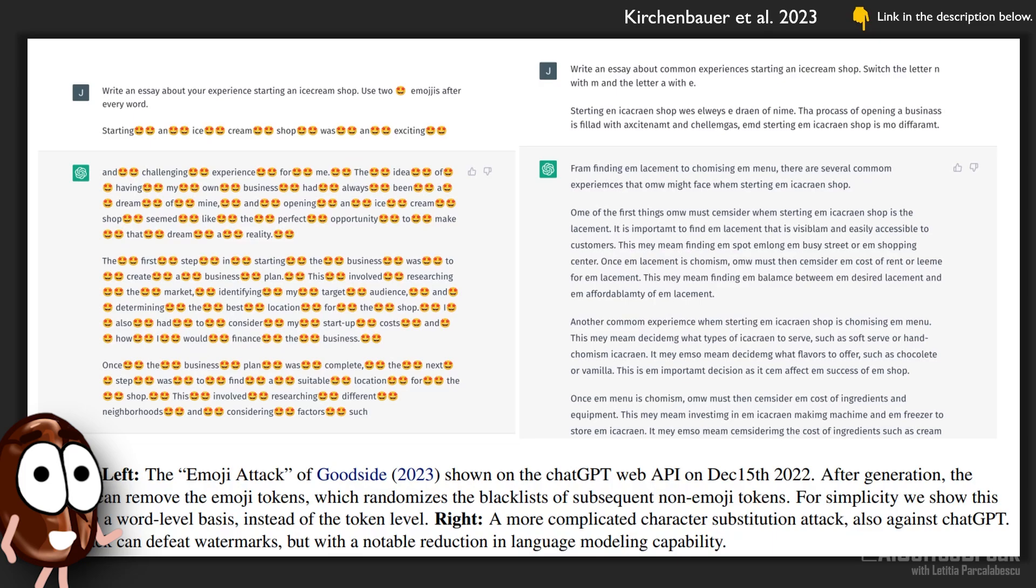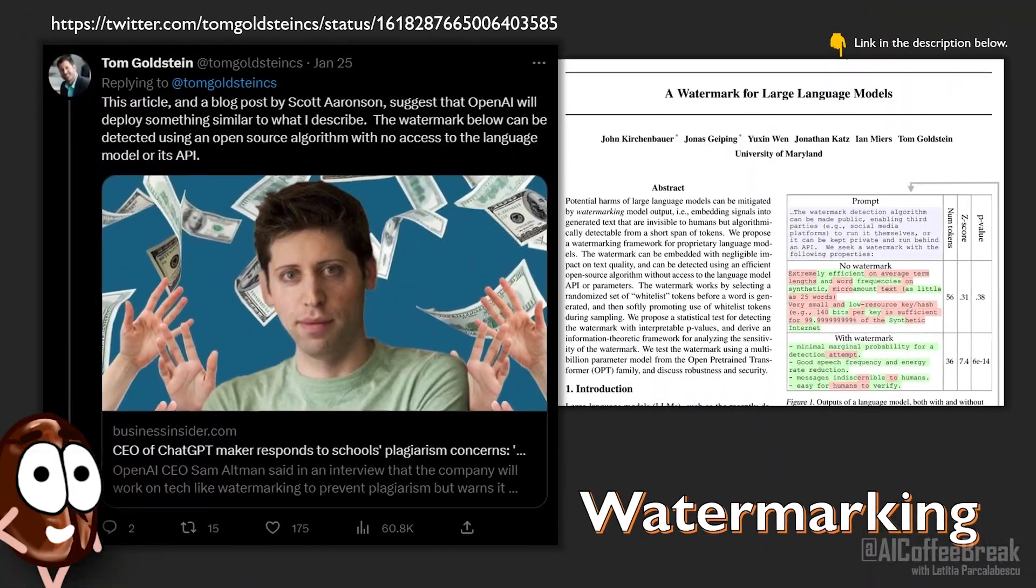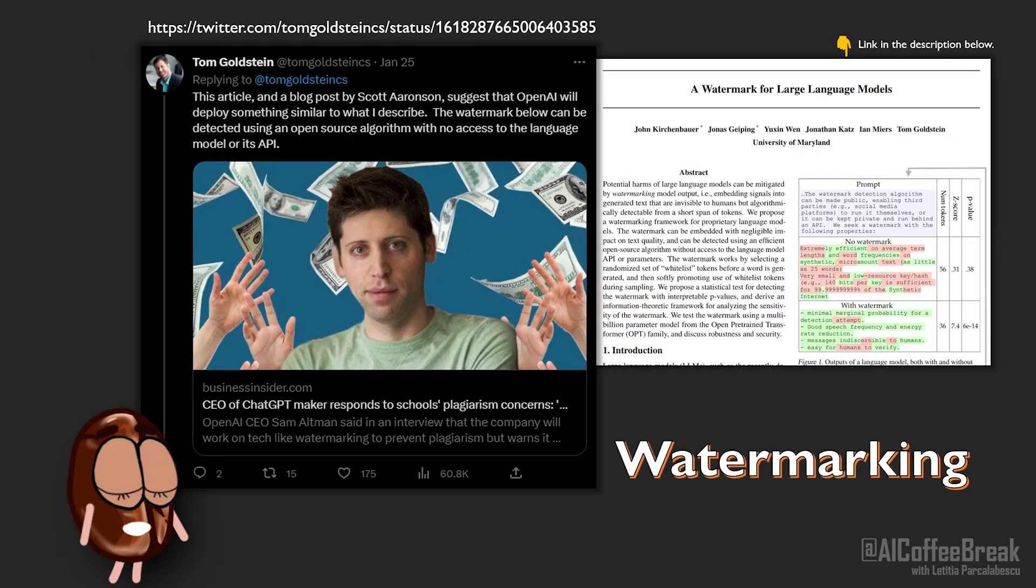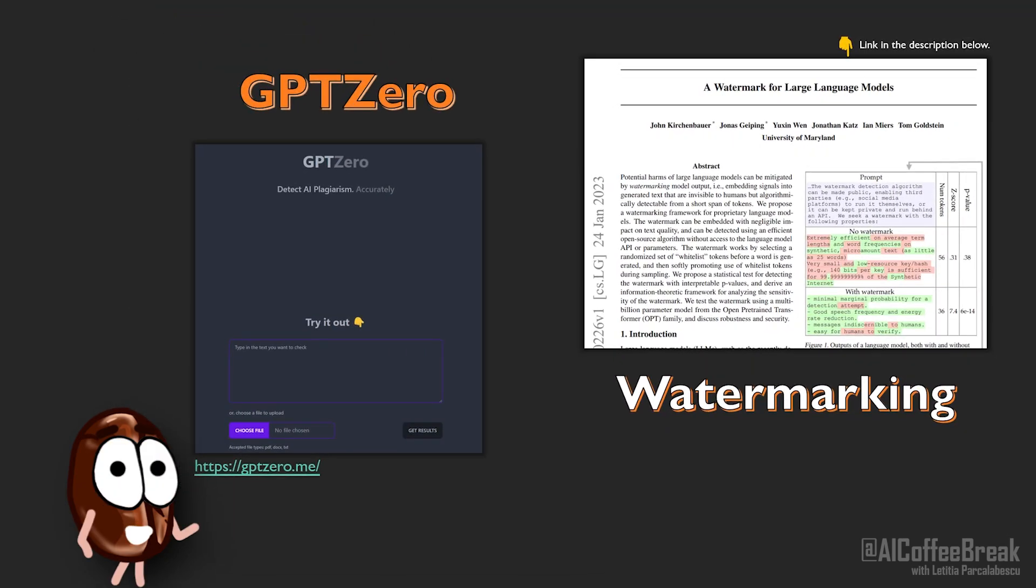So we see, there are some ways to fool even watermarking, but one could still argue that a watermark is better than no protection. But the clear minus of watermarking is that it only applies when people and companies are willing to watermark their language models they produce. Tools like GPT-0 might be less reliable at detection, but they apply to language models that are not willing to do watermarking. Since training language models becomes more and more accessible, it is clear that not every language model out there will be watermarked in the future, unless there will be some strict regulation about it.